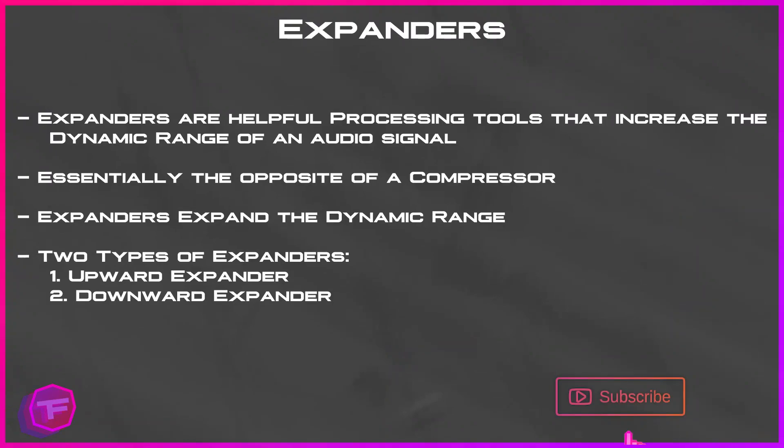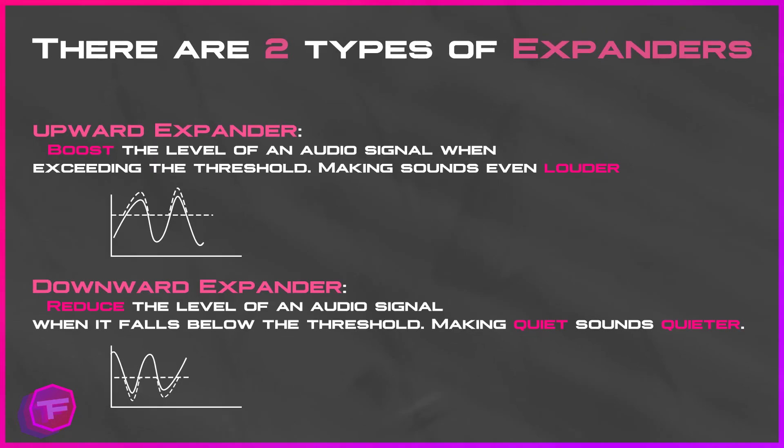Expanders are helpful dynamic processing tools that increase the dynamic range of an audio signal. They are essentially the opposite of a compressor, which decreases the dynamic range. Expanders expand the dynamic range. There are two types: upward expansion and downward expansion. Downward expanders reduce the level of an audio signal below a threshold, while upward expanders boost the audio level above a certain threshold.